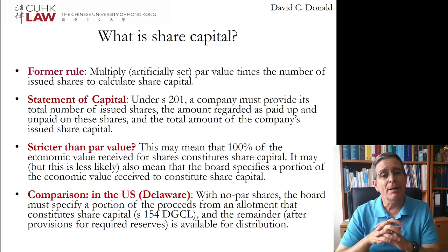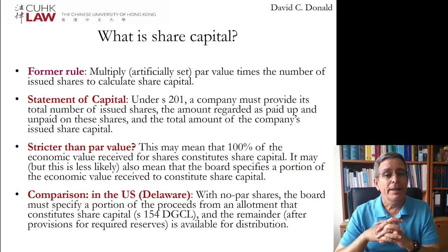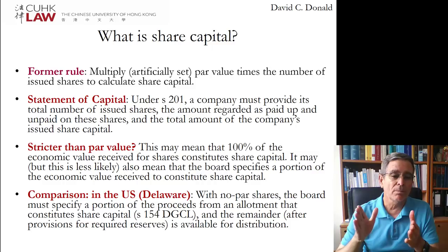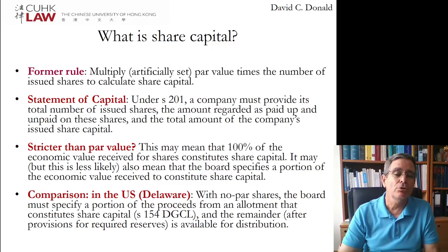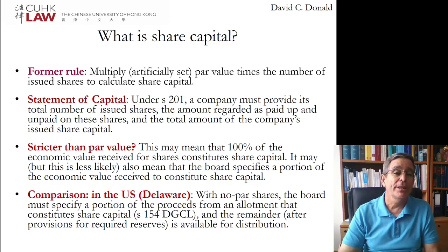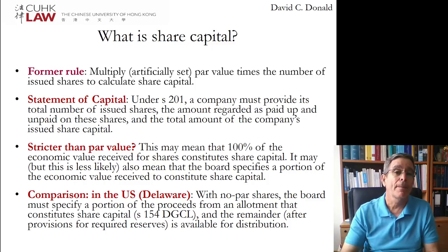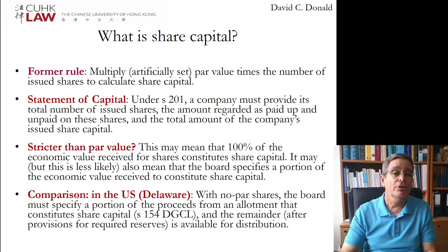We have a statement of capital under section 201 that has to be given to the company's registry every time the capital is altered. The rule now probably means that when we pay in money to receive a share, the full purchase price of the share will be called share capital — or the portion of share capital to that one share that you're buying. Multiply the payments times the total number of shares that have been sold and you have the total share capital.